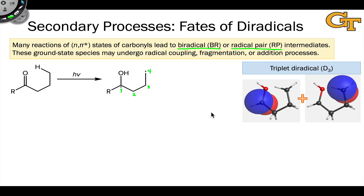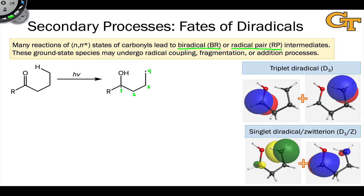Triplet diradicals are pure diradicals. But in the singlet, something interesting happens: the SOMOs have some bleed-over, where there's electron density on both atoms for both supposedly unpaired electrons, indicating some probability that the electrons will be paired. At any given moment, there's some zwitterionic character in this structure. So the singlet diradical–zwitterion distinction is somewhat artificial, and we should expect either diradical or zwitterion reactivity — or a quantum mechanical mixture of the two — depending on the solvent, temperature, and other reaction conditions.